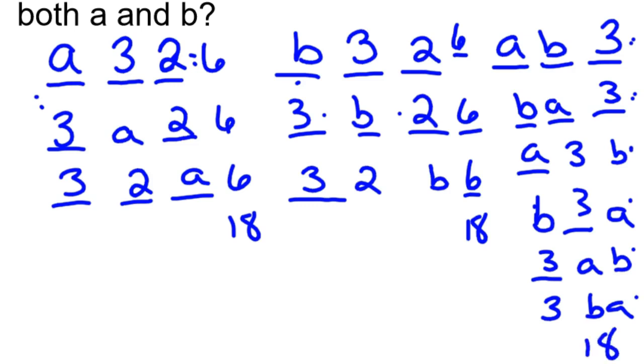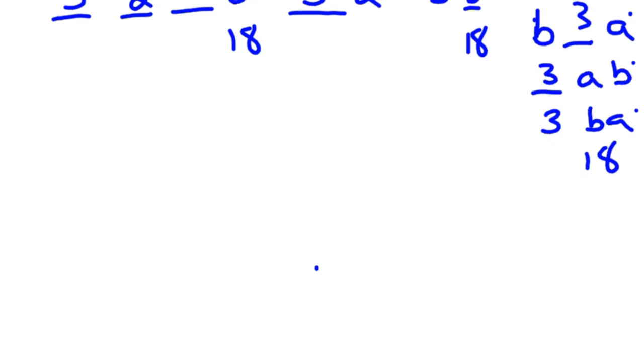You count these up: three, six, nine, twelve, fifteen, eighteen. So we have eighteen ways for that one. Total, we have basically eighteen ways where there's only an a, we have eighteen ways where there's only a b, and we have eighteen ways where there's an a and a b both.